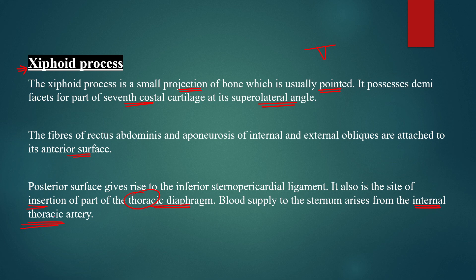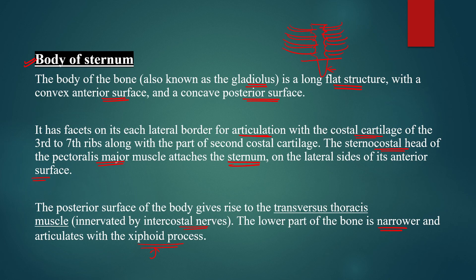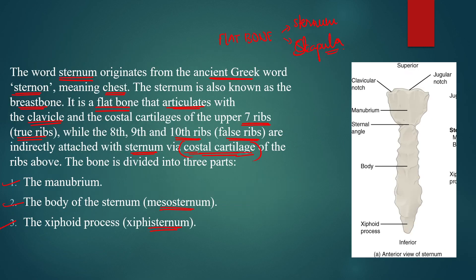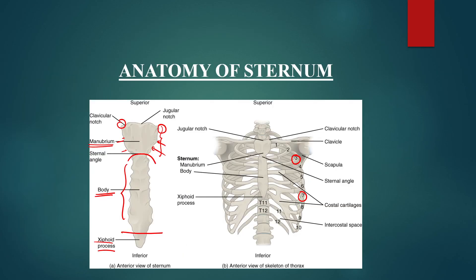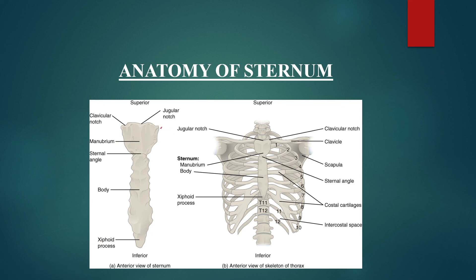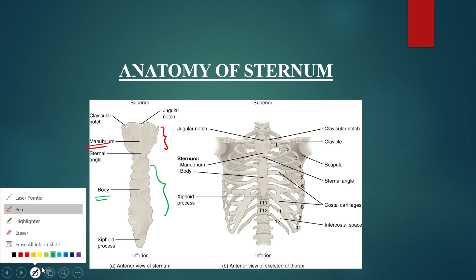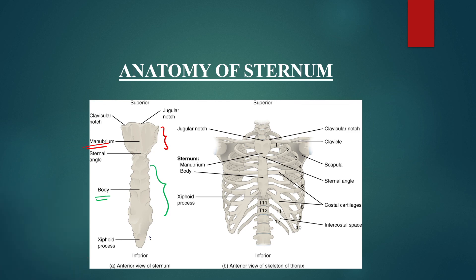Blood supply to the sternum arises from the internal thoracic artery. To summarize, the sternum has three basic areas: the manubrium at the top, the body in the middle, and the xiphoid process at the bottom — these are the three main structural parts of the sternum.